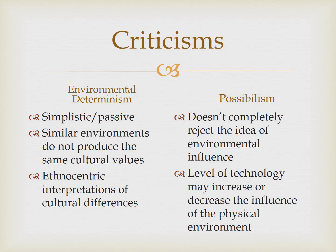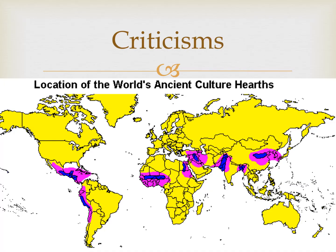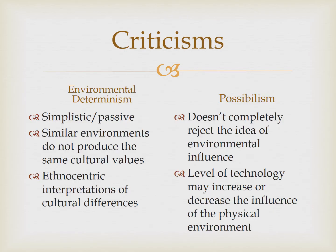This ethnocentric approach made the argument that the most productive regions were the temperate ones. But when you look at the hearths of civilization — where civilization originated — the temperate regions were not what environmental determinists claimed they were. Possibilism has its share of critics as well. It doesn't completely disprove the influence that environment has on human culture — while the limits are more broad, there are still limits.